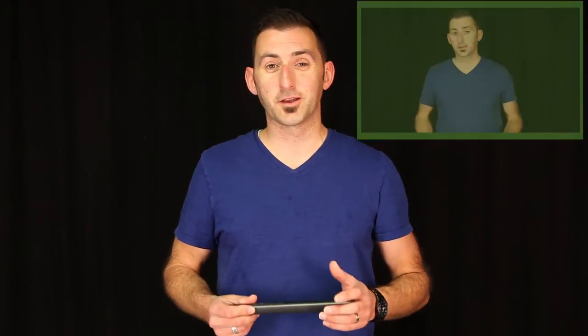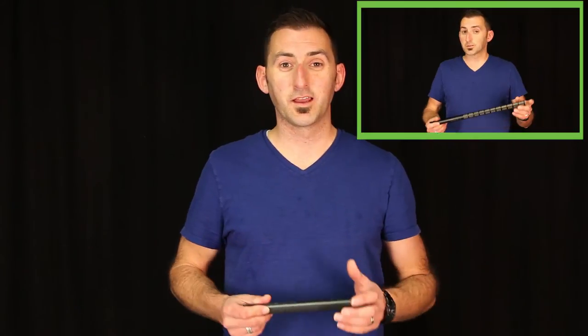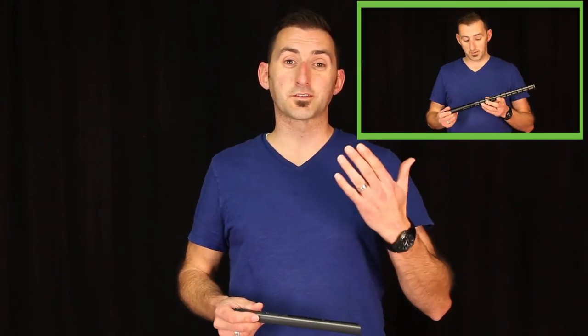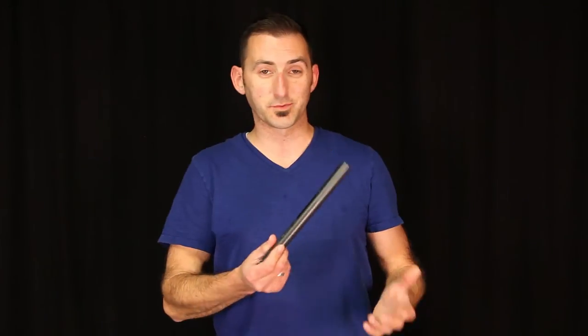On the other videos we've done about shotgun mics, we usually use the AKG C568B on our recording. You could go back and listen to some of those and compare them to the Sennheiser ME-67 that we're using today, since I'm holding this one.